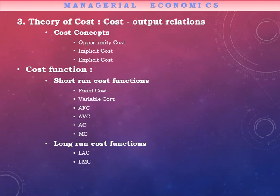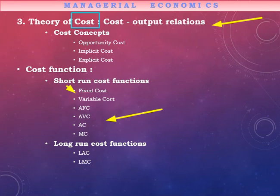A term causally linked to production is cost. When a producer decides how much to produce, they must carefully analyze cost figures. There are many types of costs: opportunity, implicit, and explicit costs, as well as fixed and variable costs, each with further divisions in average and marginal terms. The cost function is divided into short run and long run. In the short run, some factors are variable while some are fixed; in the long run, all factors become variable.